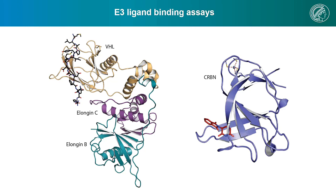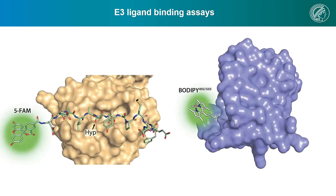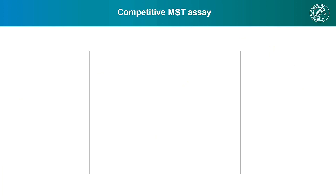So we took the structural information of the two most widely investigated E3 substrate receptors — VHL on the left, here in complex with a hypoxia-inducible factor I-alpha derived peptide, and on the right thalidomide in complex with Cereblon — and turned both of these ligands into reporter molecules by linking fluorophores to them. In the case of VHL, we attached a FITC-derived molecule, and for Cereblon, we attached a BODIPY dye. These reporters allowed us to develop a competitive MST assay.